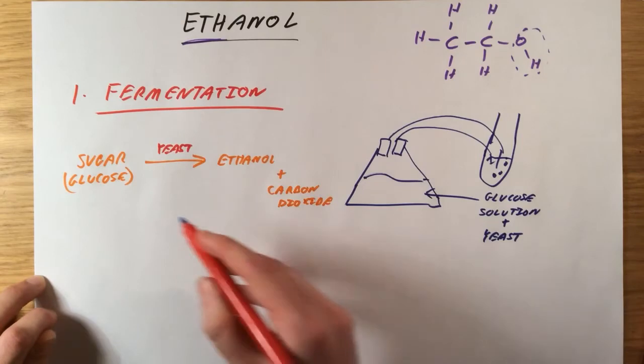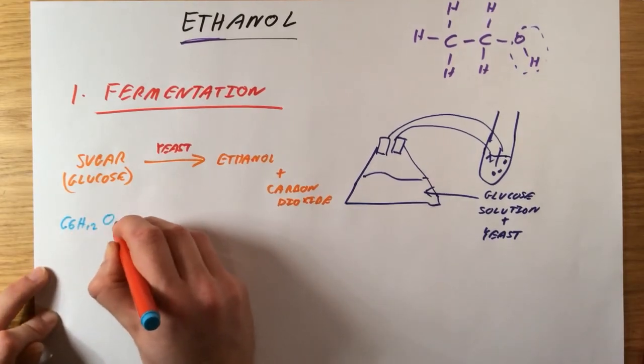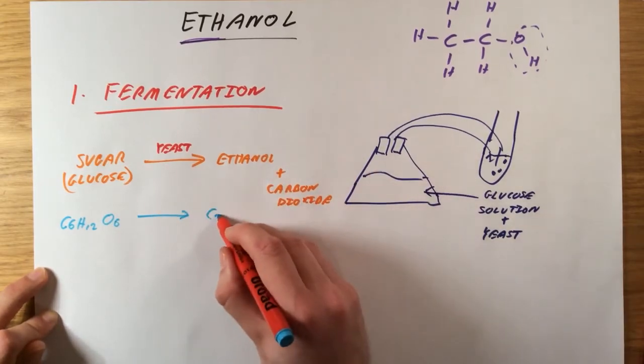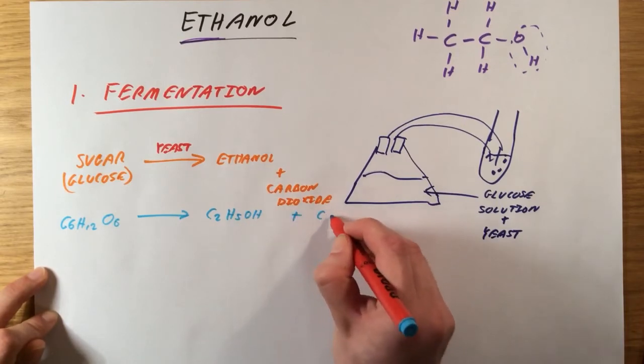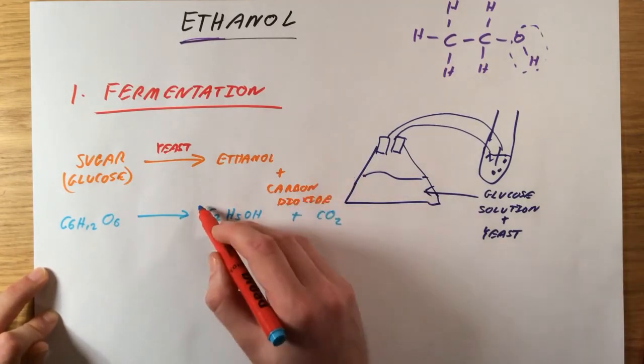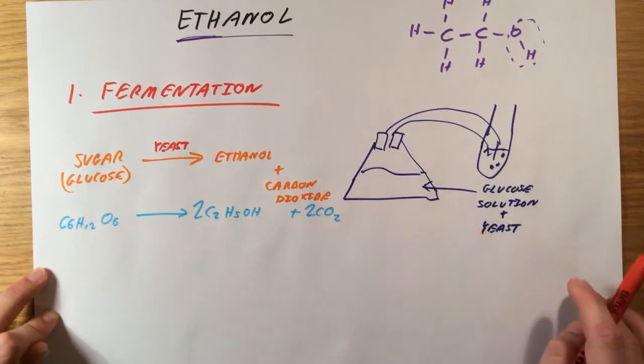In terms of simple equations, glucose C6H12O6, you are going to be breaking it down to ethanol, which is C2H5OH, plus carbon dioxide. If you are balancing this, we are going to have two lots of that one and two lots of that. That should balance.